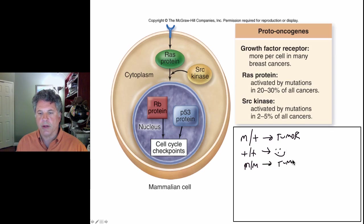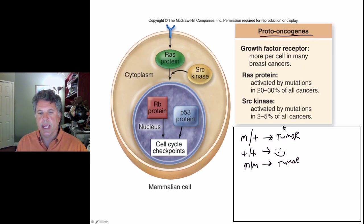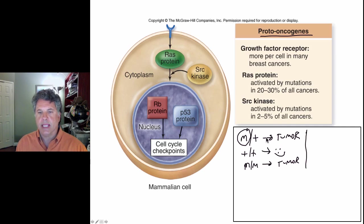You can see the difference between proto-oncogenes and tumor suppressor genes: for proto-oncogenes, you only need one mutant copy to cause release from normal controls of cell proliferation. Proto-oncogenes when mutated to oncogenes are dominant — dominant mutations. You only need one mutated copy in order to have the cancerous or tumor phenotype appear in cells.